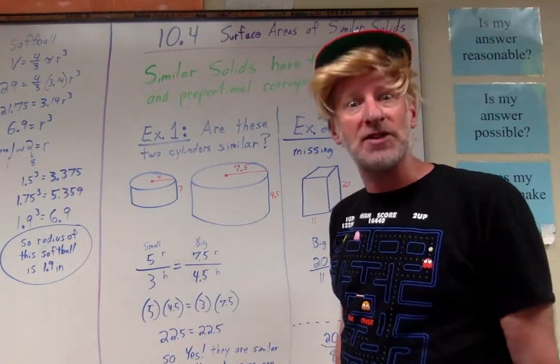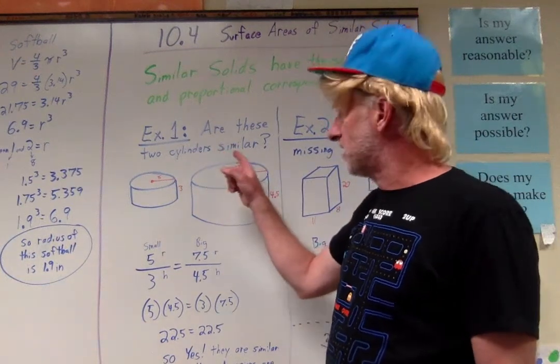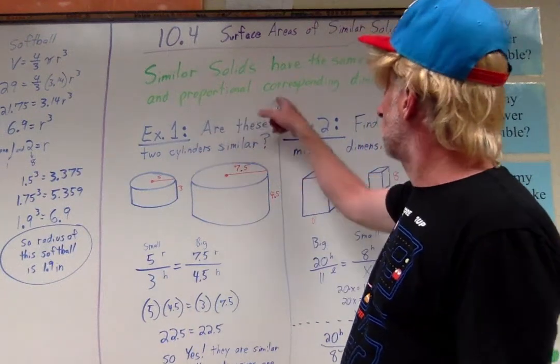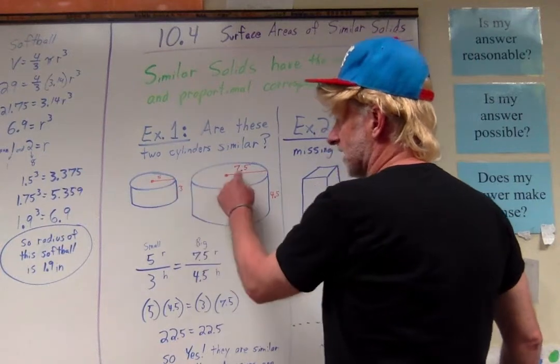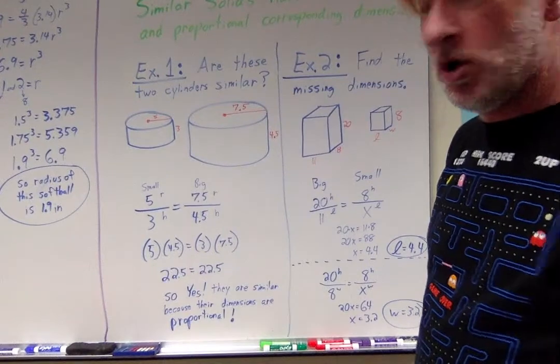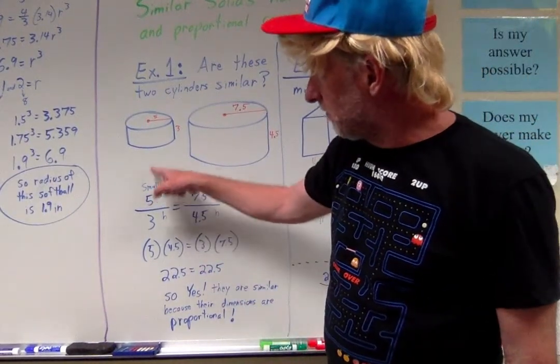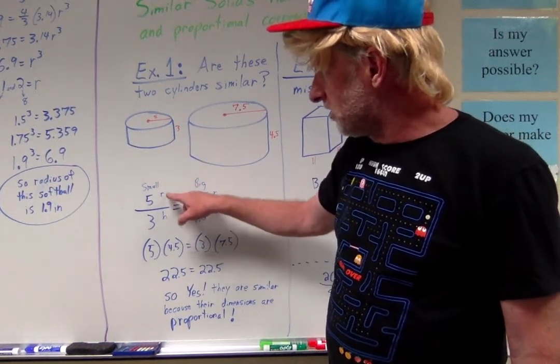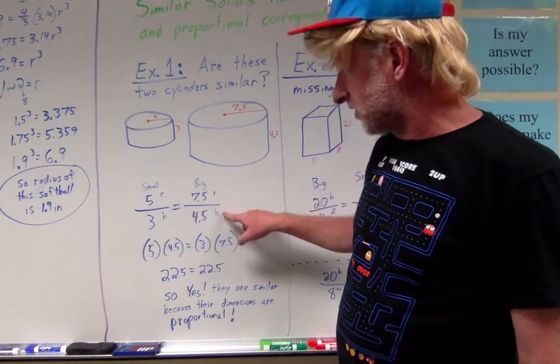You've got two different kinds of problems you've got to master! Take a look at this first example! They're going to ask you some questions, like, Are these two cylinders similar? Well, to be similar, they have to have proportional corresponding dimensions! So, I've got a radius and a height, I've got a radius and a height! Let's compare those! Look at my beautiful poetry, look at how I'm always putting in my labels on my proportions, everybody! I've got a ratio here for the small cylinder, I've got a ratio here for the big cylinder!